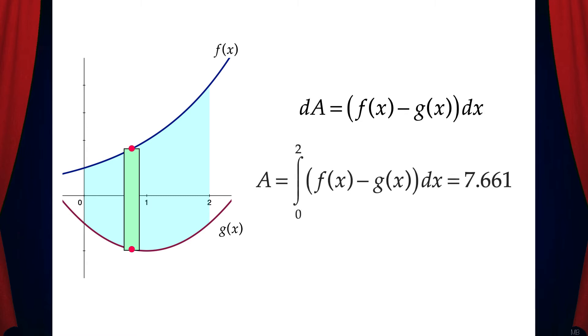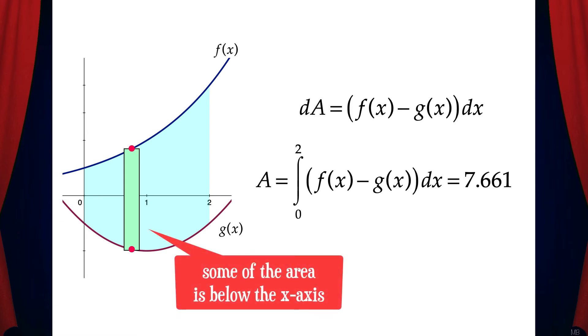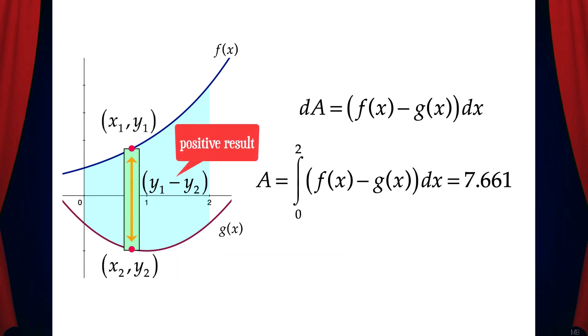And so that means the area of the region between the two curves is the definite integral from 0 to 2 of f(x) minus g(x) dx. We can use a calculator to solve this to get 7.661. One thing to note about this problem is that some of the area is below the x-axis. And since we're integrating from left to right, the definite integral for the g(x) curve would produce a negative answer. But since our rectangles are vertical and we're taking y1 minus y2 to get the height, we'll get a positive result.